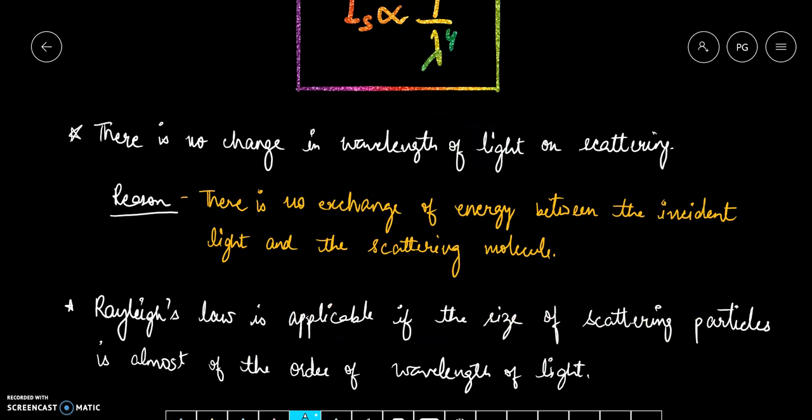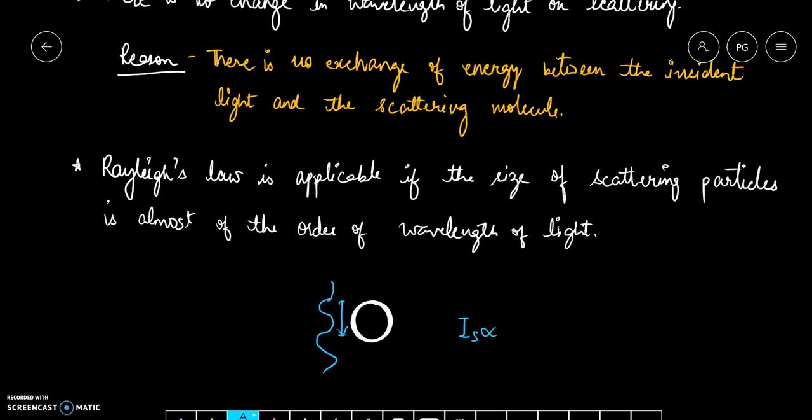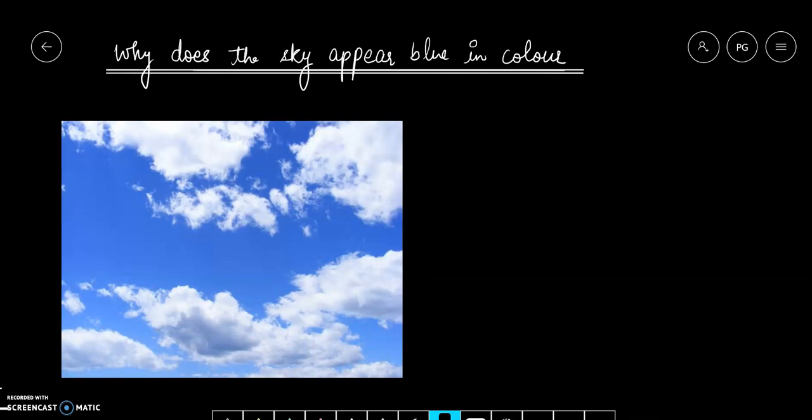A very important point is Rayleigh's law is applicable if the size of scattering particle is almost of the order of wavelength of light. Only then the Rayleigh law of scattering is applicable, that is intensity of scattering of that light is proportional to 1 upon lambda to the power 4 where lambda is the wavelength of that light. So if the scattering particle is of large size, then in this case Rayleigh's law is not applicable.